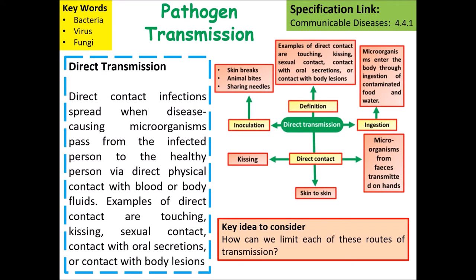In terms of disease transmission, the first types we want to look at are methods of direct transmission. Direct contact transmission is when organisms pass from an infected person to a healthy person by direct physical contact — with the body, blood or bodily fluids.